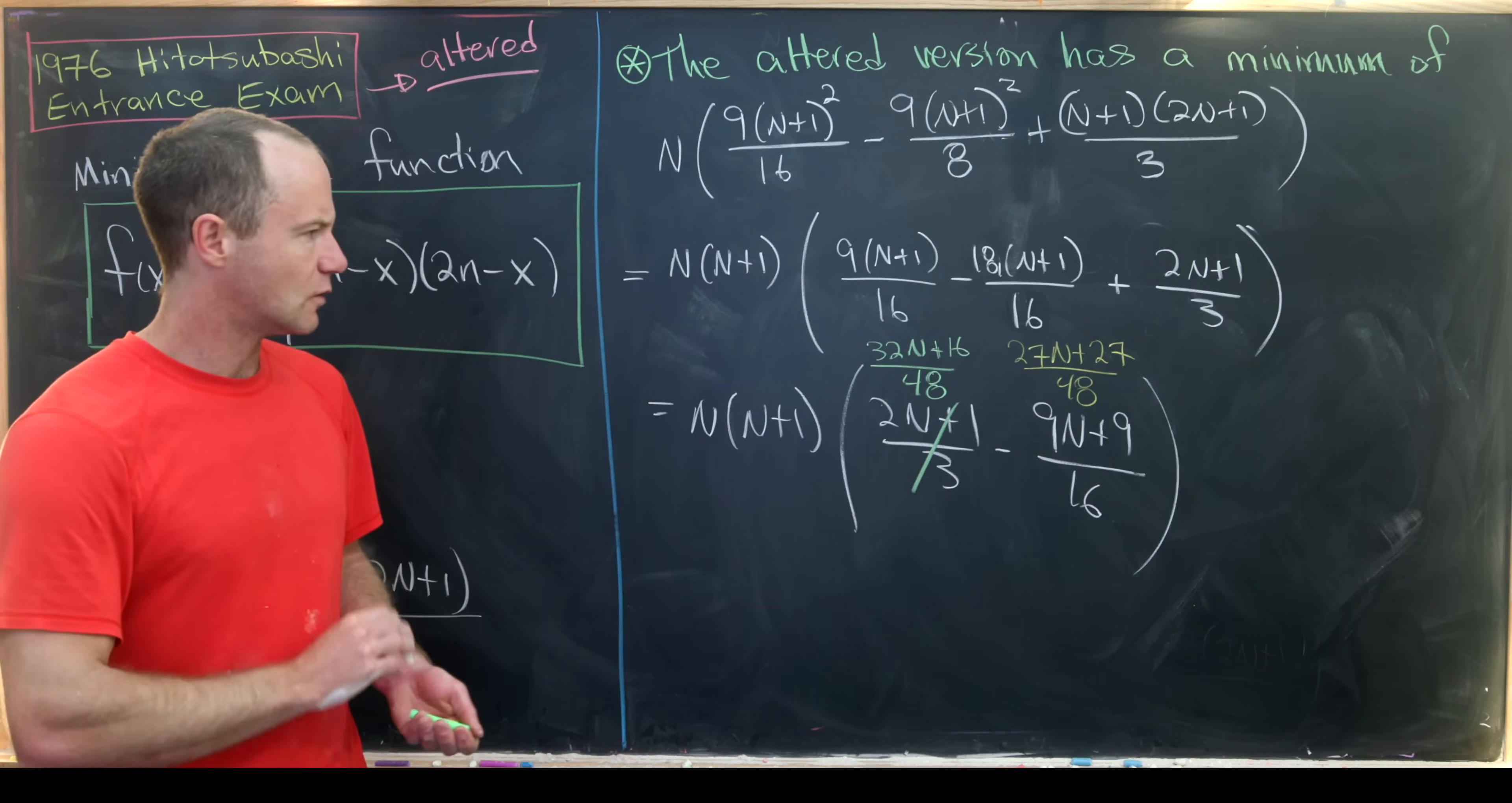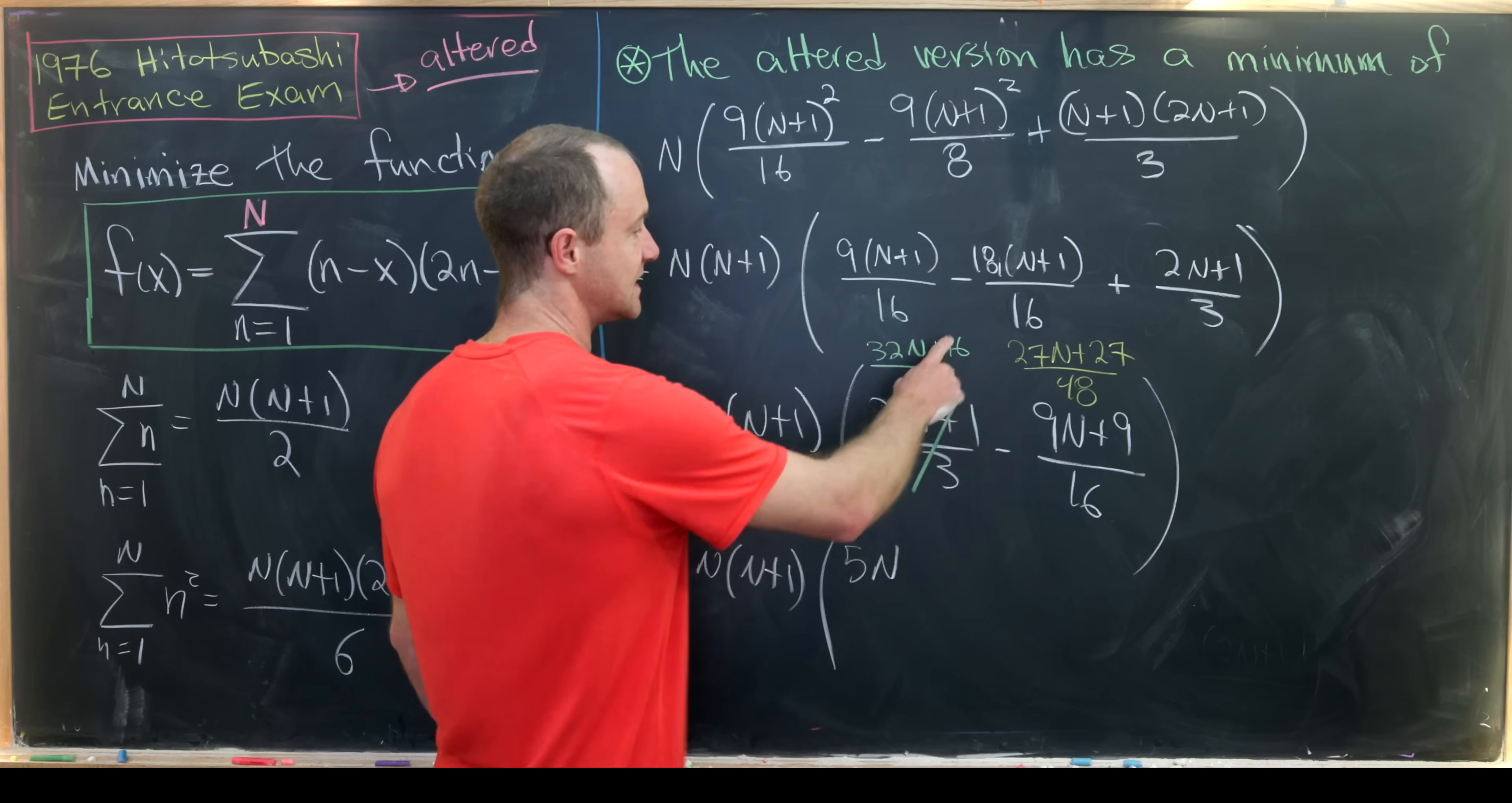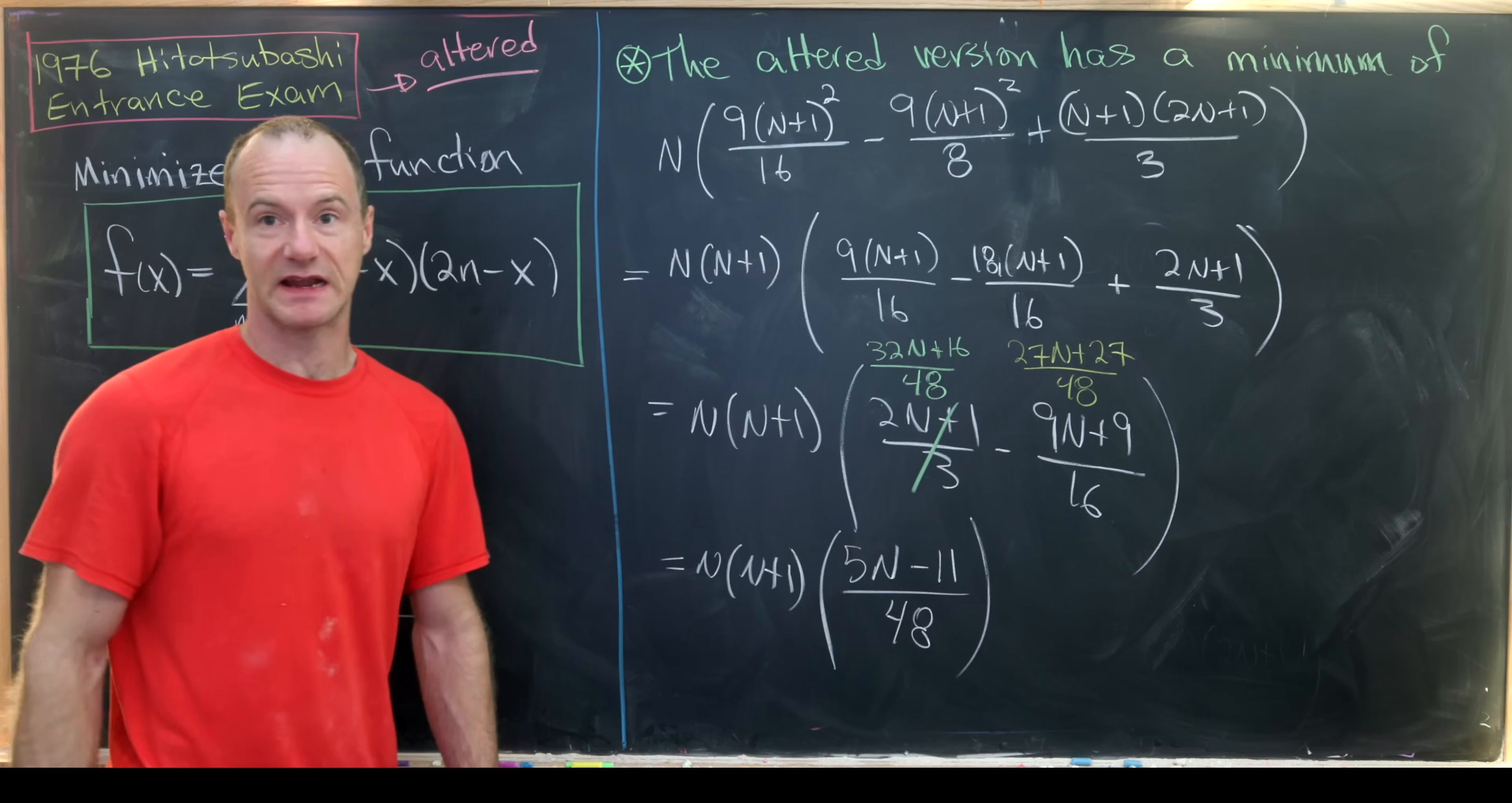Okay so what happens when we combine those? We get N(N+1) and then here we'll have 32N minus 27N, that will be 5N, and 16 minus 27, that'll be -11, so minus 11 all over 48. So we're left with something like that.